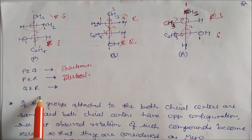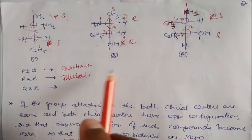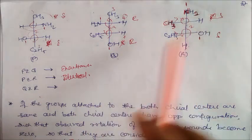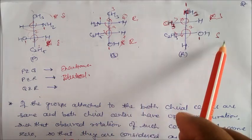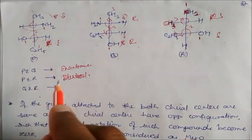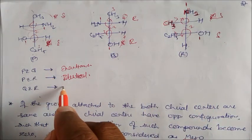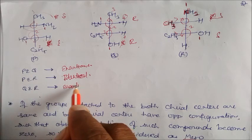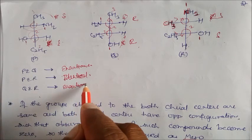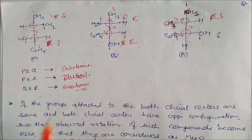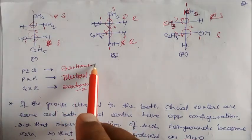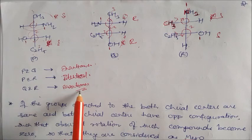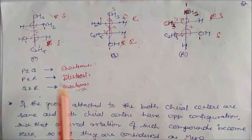So P and Q — see carefully — S, R and S, R — so P and Q is your enantiomer. Similarly if you see P and R: one is S, one is S, this is S and this is S. So P and R will be identical. And Q and R: if you see Q is R and S, and R is S and S — so Q and R will be your enantiomers — it is opposite to each other.